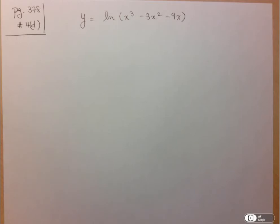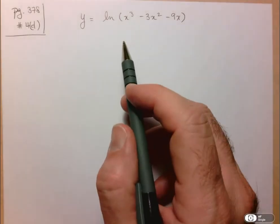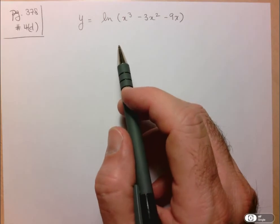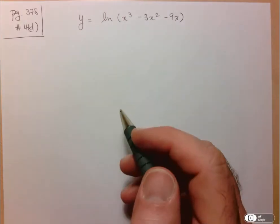Hi folks, we're going to take a look at page 378, number 4D. They've given us this function and they want us to find the critical points and if those critical points give us a local max or local min.